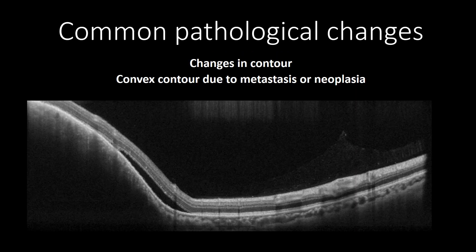Convex contour changes are seen in several pathologies, and the most common is choroidal neoplasms or metastasis. Although myopia can show dome-shaped changes, it is rare. In OCT cross-sections presenting with convex changes in contour, choroidal neoplasm should be suspected, and further investigation should be carried out to rule out a tumor.